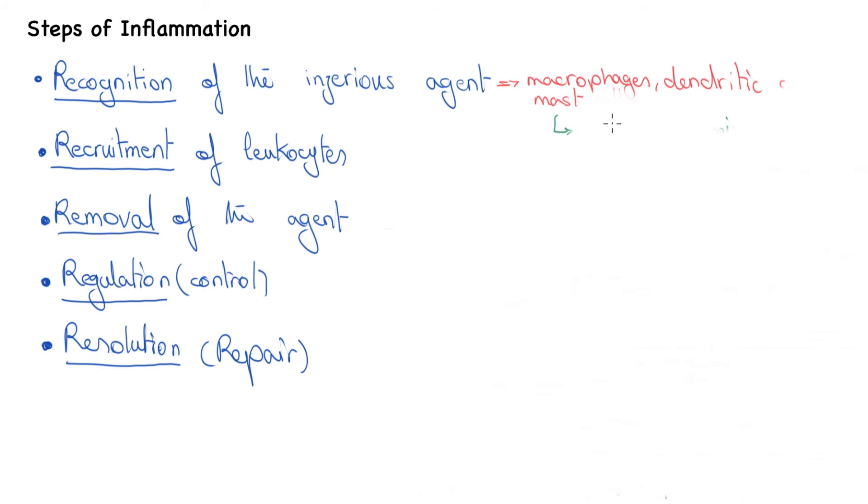This results in the elimination of microbes or dead cells or whatever other offending agent that we have there, and therefore completing the third step. So far, the recognition of the injurious agent has been completed, the leukocytes have been recruited to the site of inflammation, and the offending agent has been removed and eliminated.